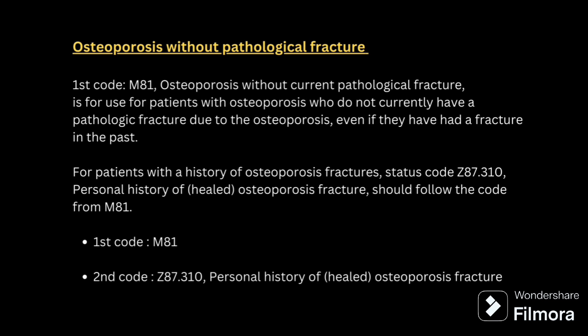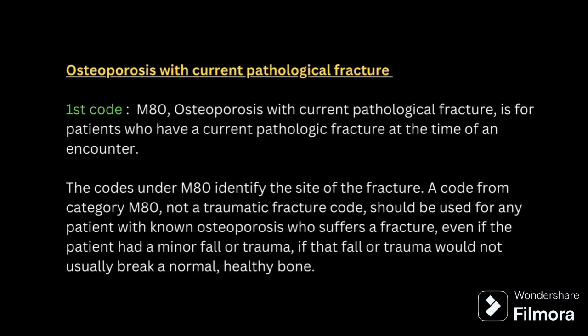For osteoporosis without pathological fracture, we code M81. Whenever coding for osteoporosis without pathological fracture, you also have to check whether the patient has any history of a healed osteoporosis fracture. If there is a history of a healed osteoporosis fracture, then a second code should be assigned for personal history of healed fracture — that is Z87.310.